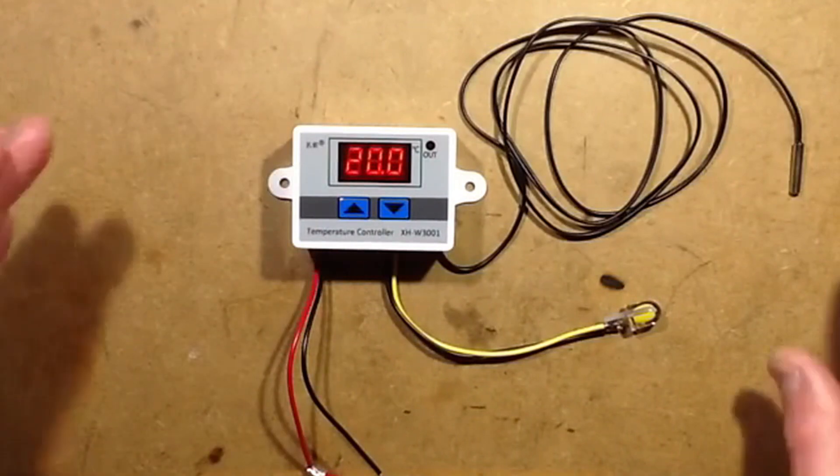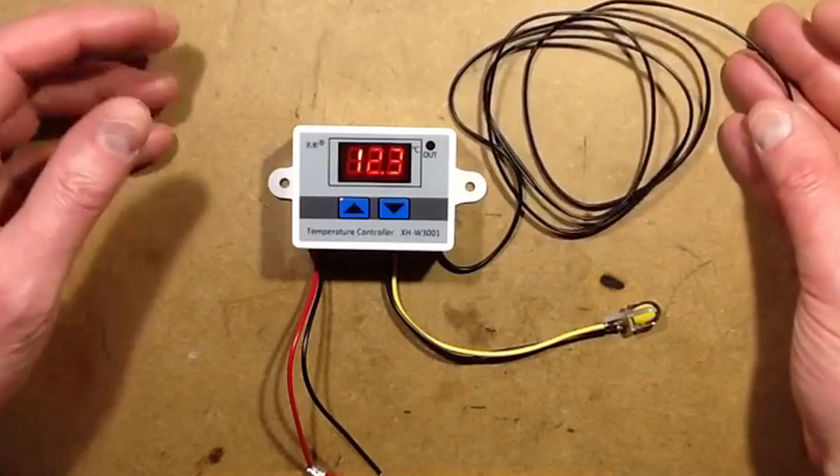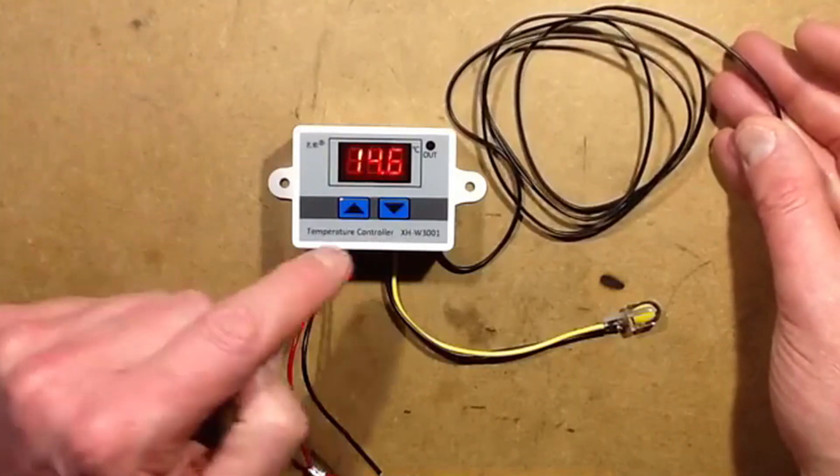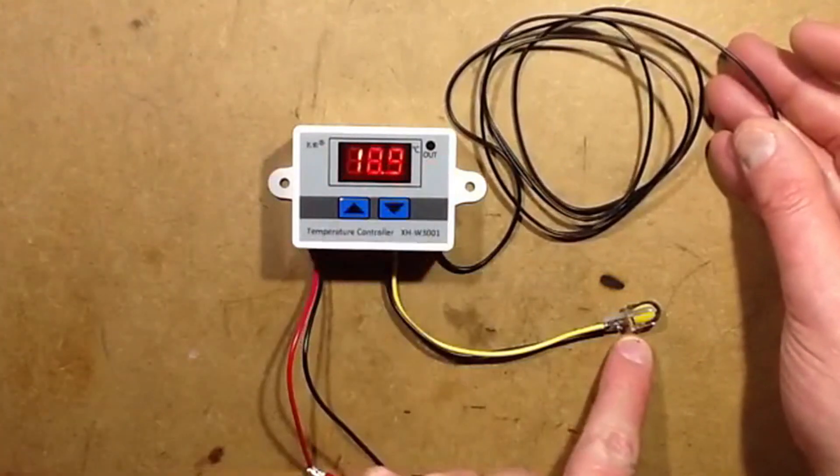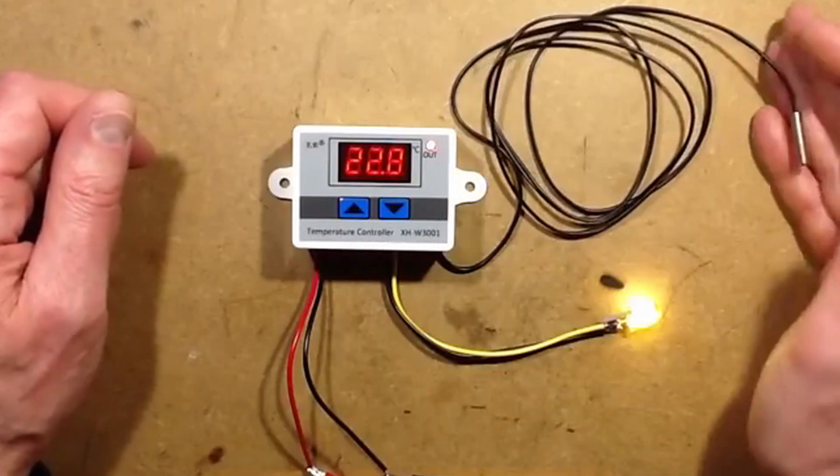Once it's initialized, it's going to turn on at 22 degrees centigrade and off at 20. So at the moment it's too cold for it to turn on the cooling, so I'm going to heat it up with my hand. As soon as it gets up to 22 you'll see the little light come on, and this light will come on too. There we go.